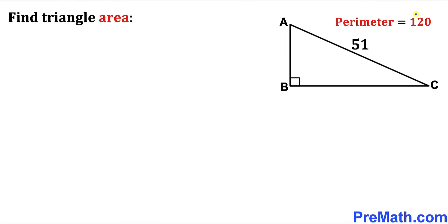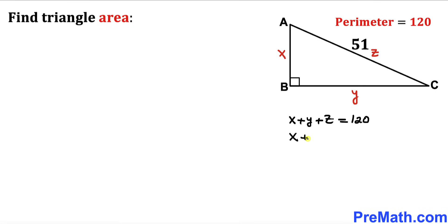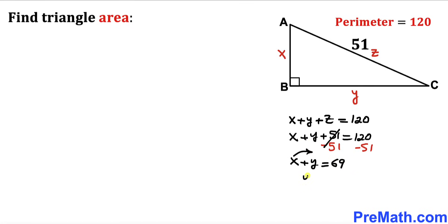We know the perimeter of this triangle is 120. If we call the sides x, y, and z, then x plus y plus z equals 120. We know z equals 51, so substituting gives x plus y plus 51 equals 120. Subtracting 51 from both sides, x plus y equals 69, which means y equals 69 minus x.